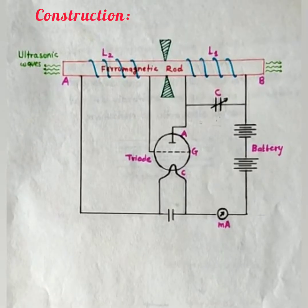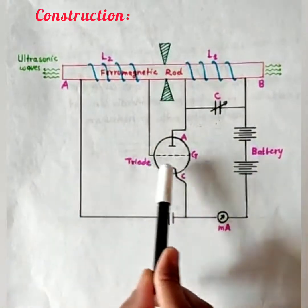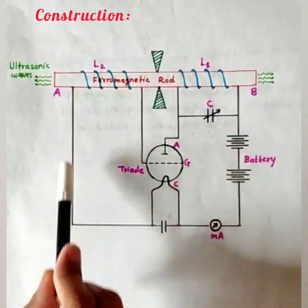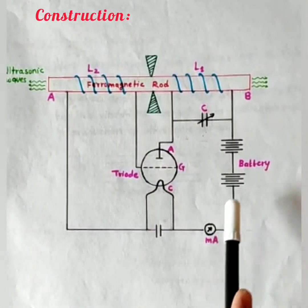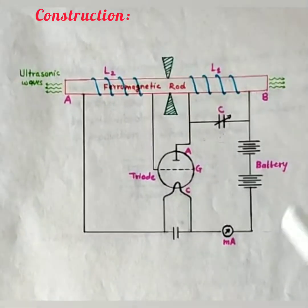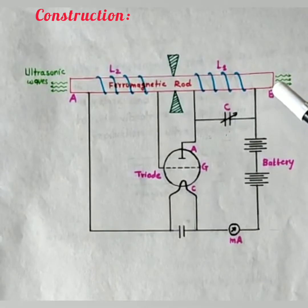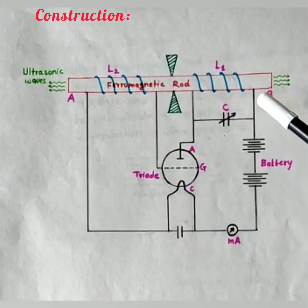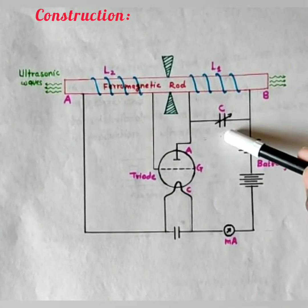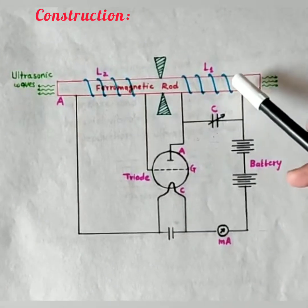Here, one end of L2 is connected to the base of the triode and the other end is connected to the ammeter and terminal of the battery. Coil L1 is wound on the right side of the rod along with the variable capacitor C and this capacitor C is connected in parallel with the coil L1.